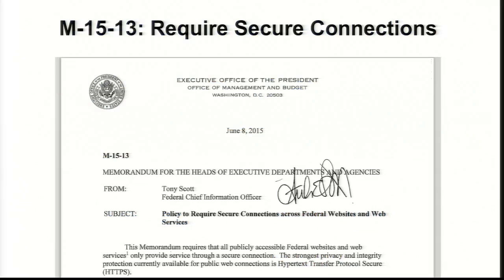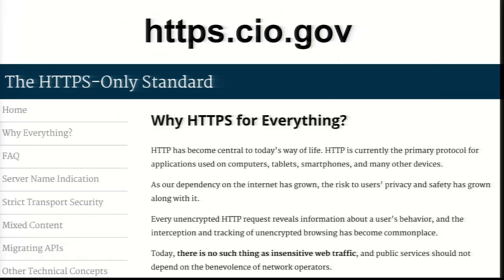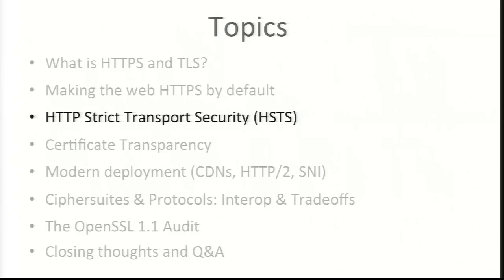Also, the US government — the White House Office of Management and Budget — has an executive policy issued in June of last year telling every executive agency: HTTPS only and strict transport security for anything public on the public internet run by a federal agency. The policy sets a deadline of December 31st of this year, so the federal government is going through a big migration to be HTTPS only, which is also a really interesting problem.